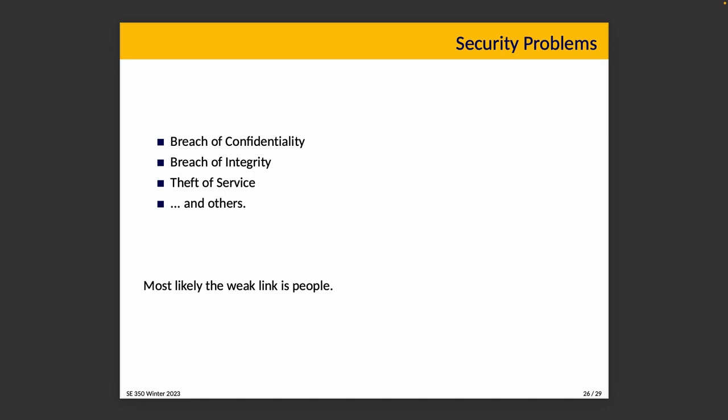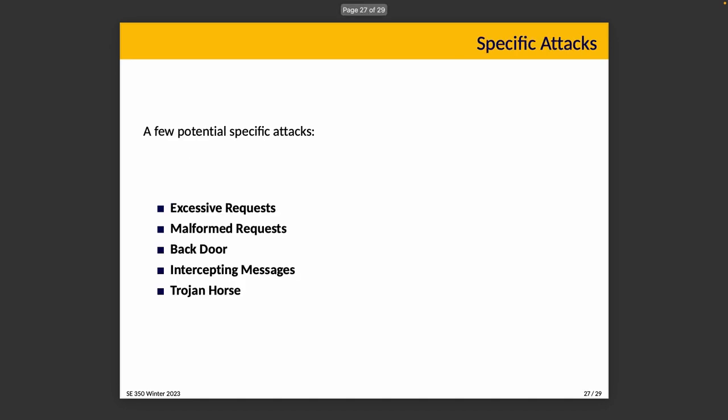The categories discussed are just types of problems that an attacker could cause. Here are a few specific attack ideas — not an exhaustive list. One is excessive requests: overloading the system with demands requiring too much CPU, too much memory, or just too many responses. Another is malformed requests: sending intentionally malformed requests that can cause the system to behave in an unexpected way, crash, or return information it should not send.